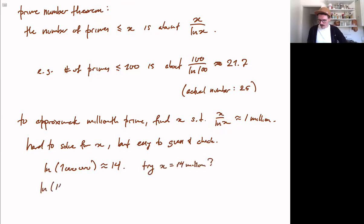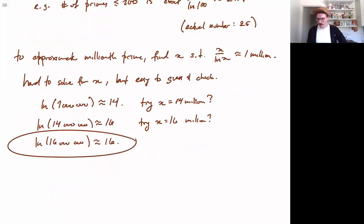Natural log of 14 million is about 16. So maybe let's try x equals 16 million. And then natural log of that is still about 16. So 16 million divided by natural log of 16 million is going to be about 1 million.